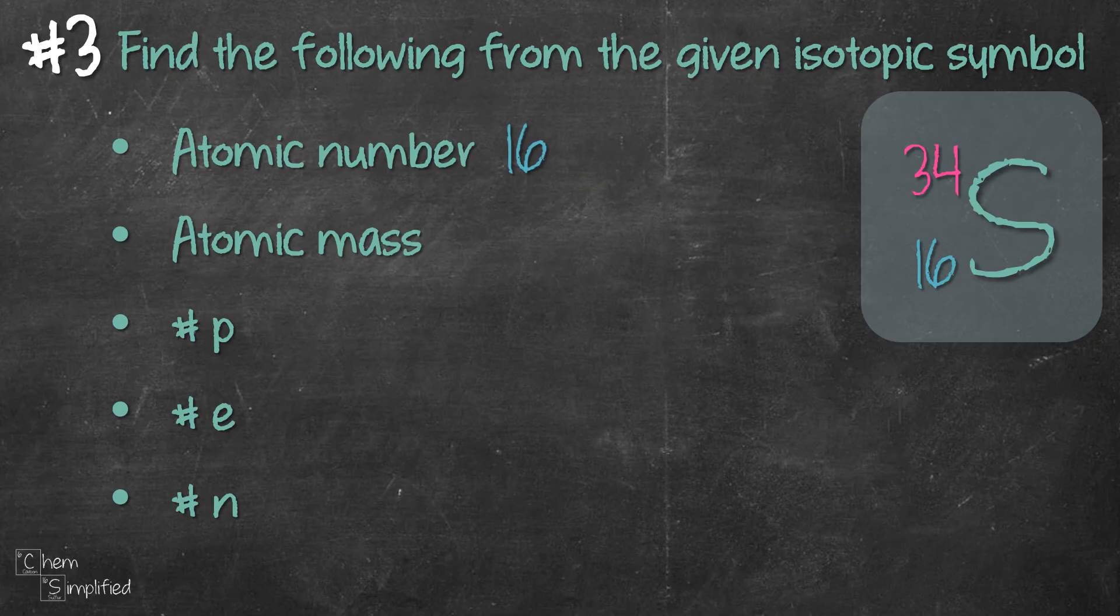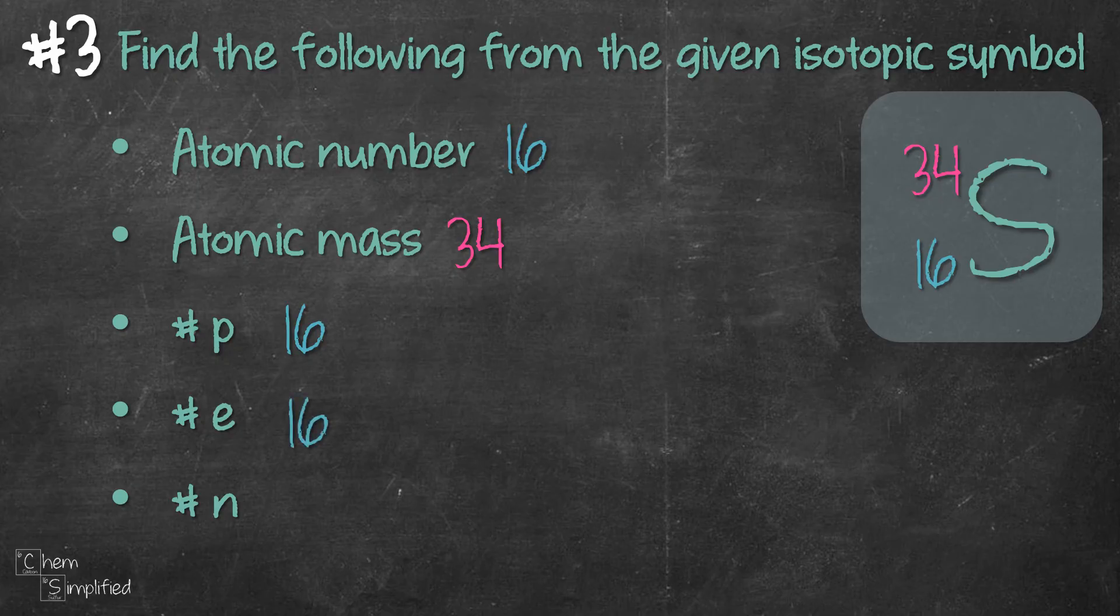Atomic mass, well that's the number that is written on the top left corner. So that means it's 34. Number of proton, that's the same as the atomic number. So that means it's also 16. The number of electrons in an atom is the same as the number of proton, which is also the same as atomic number. So that's 16 as well.